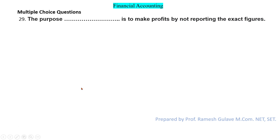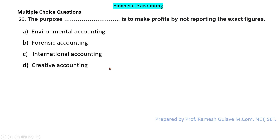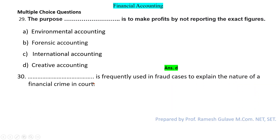The next question says: the purpose of dash is to make profit by not reporting the exact figures. This question is related to creative accounting — creative accounting is used to make profit by not reporting exact figures. So the answer for question 29 is option D — creative accounting.